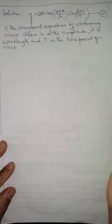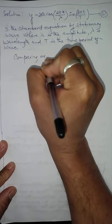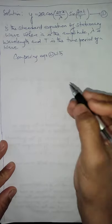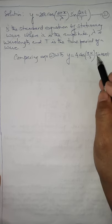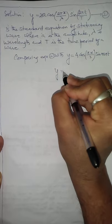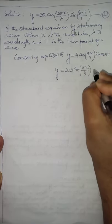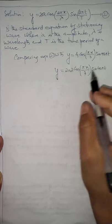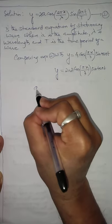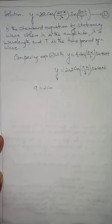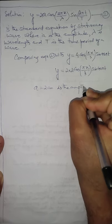Comparing equation 1 with the given equation — y = 4 cos(πx/3) sin(40πt) — I can write 4 as 2 × 2. Comparing, we see that 2a = 4, so a = 2 centimeters. Therefore, the amplitude of the wave is 2 centimeters.